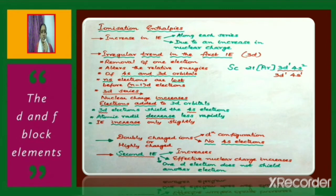This is the reason why the basic strength decreases as we move from lanthanum hydroxide to lutetium hydroxide. Regarding ionization enthalpies, there is an increase in ionization enthalpy as we move along a particular series, due to an increase in nuclear charge along that series.